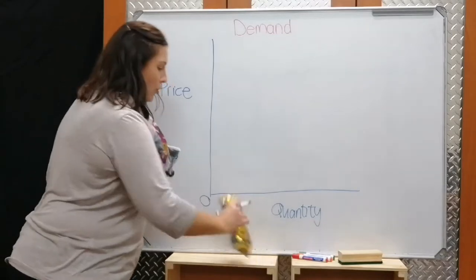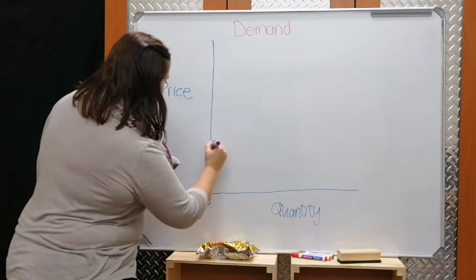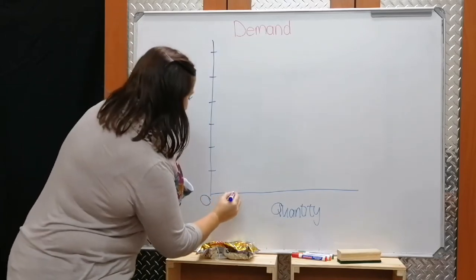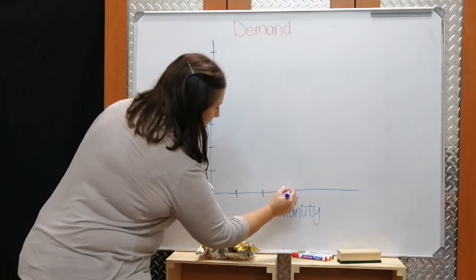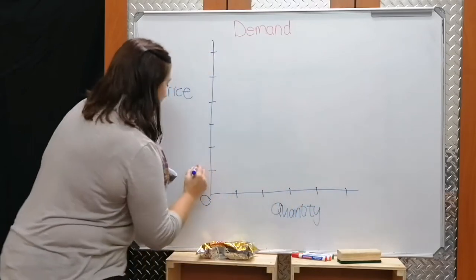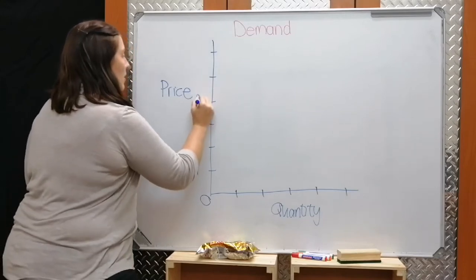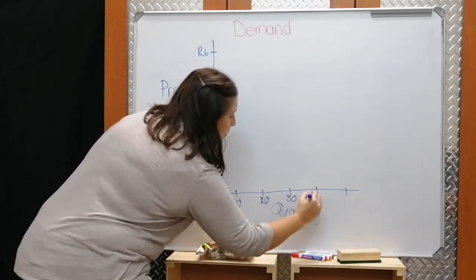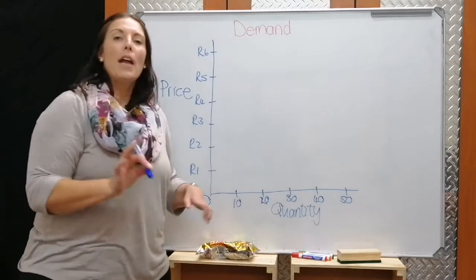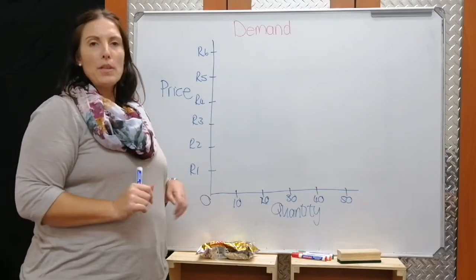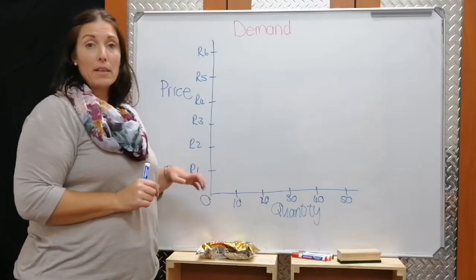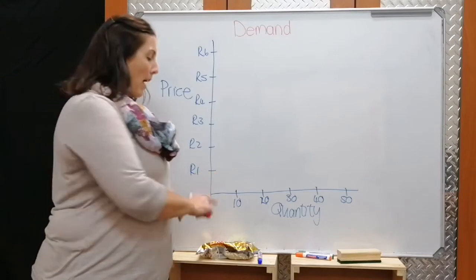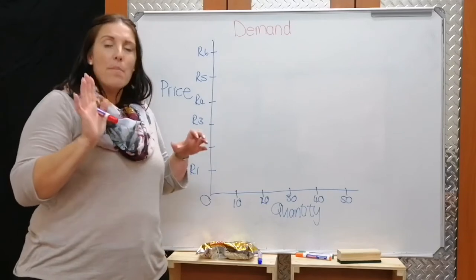Always we start where these two lines meet, like a capital L, that will be 0.00 rand and 0 quantity. Let's look at my Twiggle chips. I'm going to use increments of 1 rand: 1, 2, 3, 4, 5, 6 rand. And for quantity in packets: 10, 20, 30, 40, 50 packets. Now let's use my grade 9 class that wants to buy 2 rand chips from me. You know we normally sell it in our school for 5 rand a packet.